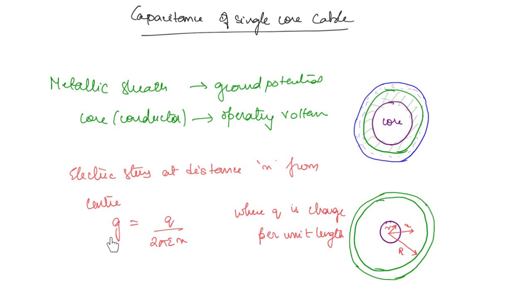If you integrate this electric stress from x equals small r to x equals capital R, what you are going to get is the potential that is existing across this capacitance. What is that potential? It is the potential difference between the conductor and the metallic sheath.